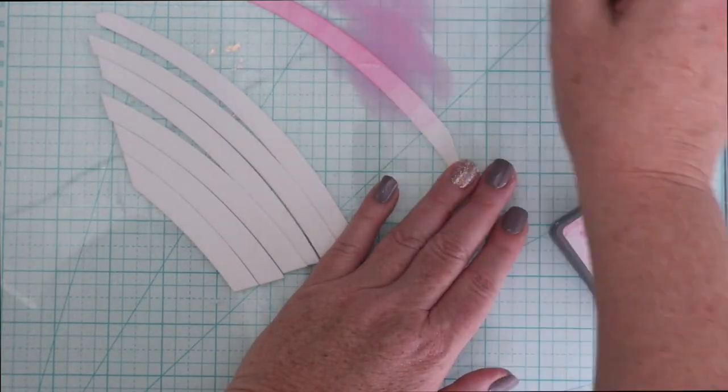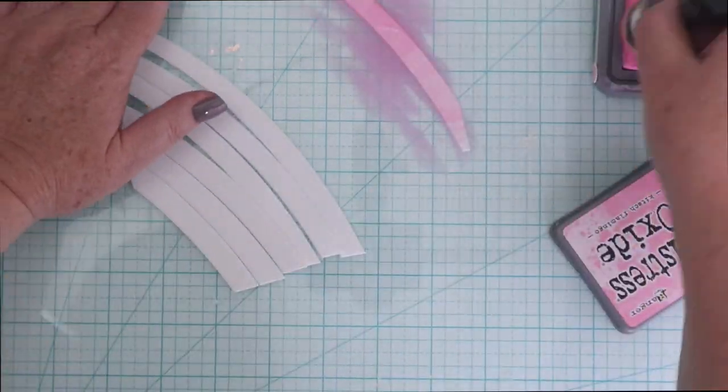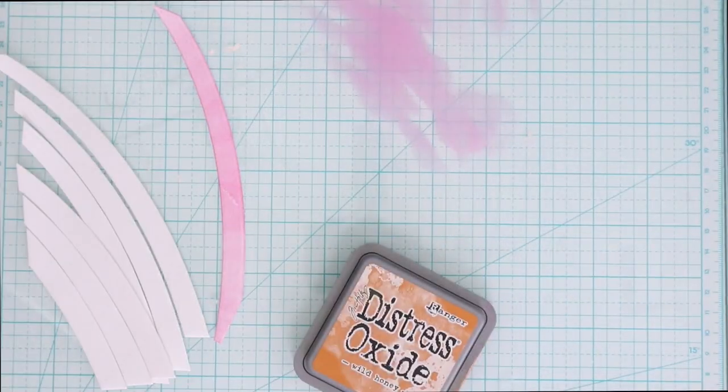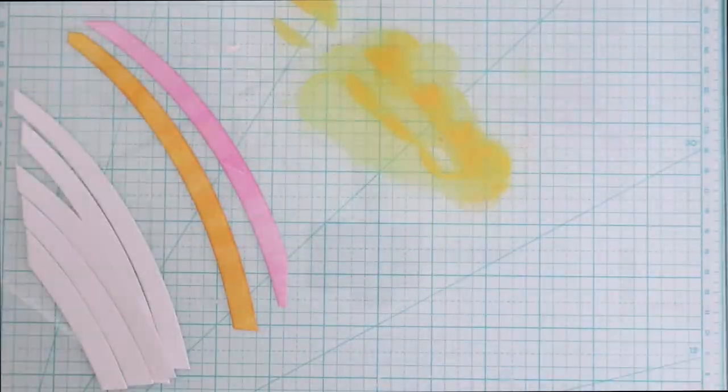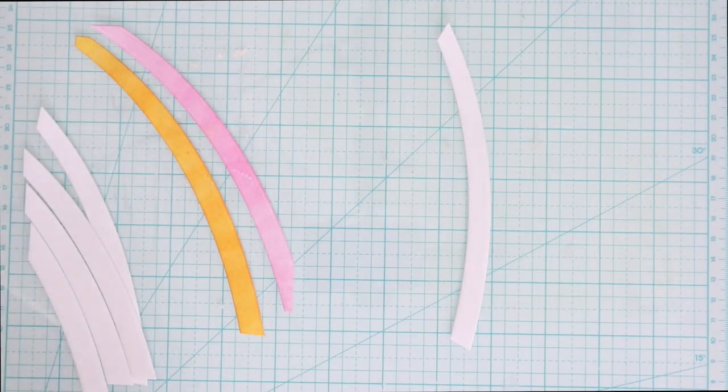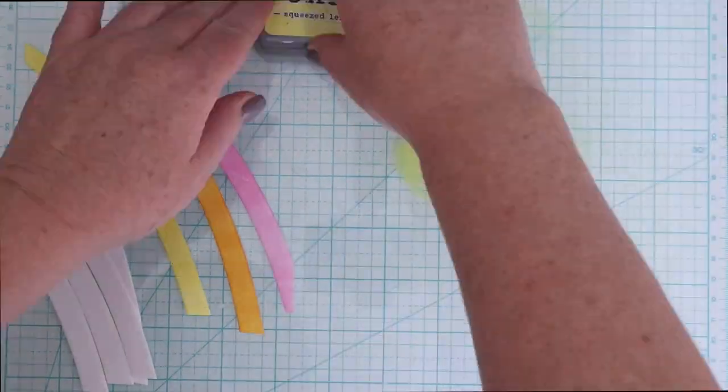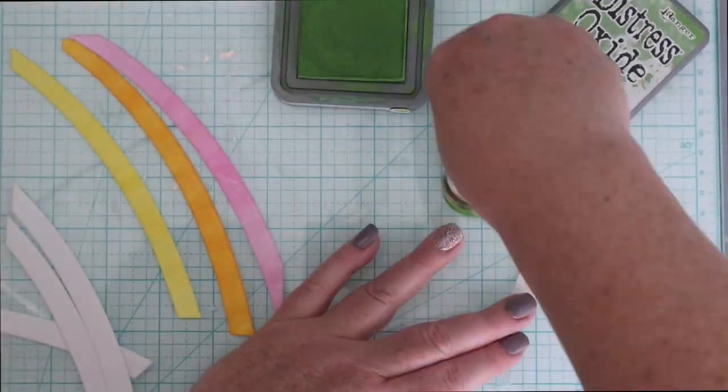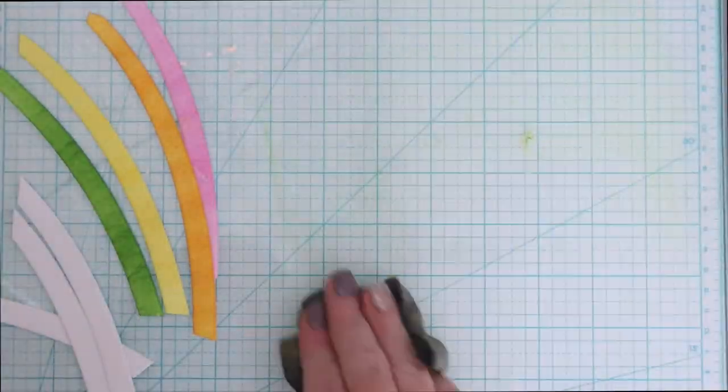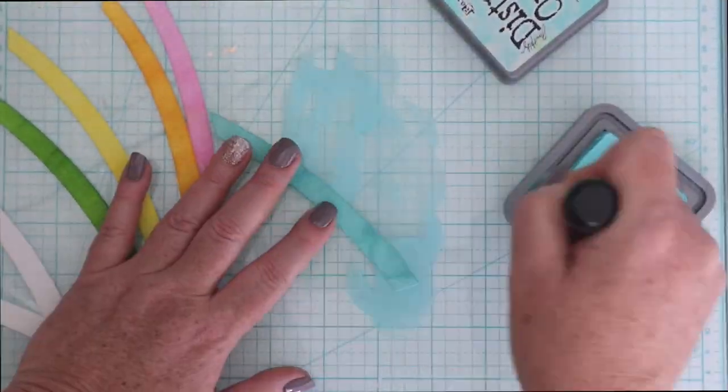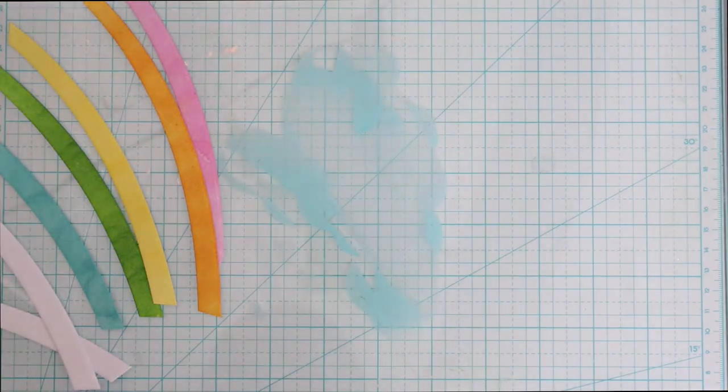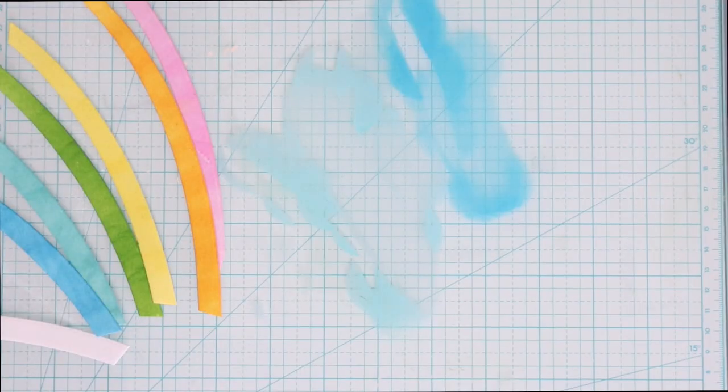The thing is you can't do your typical ink blending techniques of circular motion or even back and forth motion. You really need to pounce the ink on top so I'm just basically tapping the foam on top of that white flock but you can see that the color transfers beautifully when you do that. You're not wanting to rub it back and forth or in a circular motion because you could really rub away the flock off the paper.